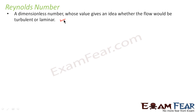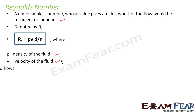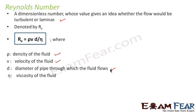Reynolds number is basically a number — the number itself will denote whether the flow is laminar or turbulent. It is generally denoted by RE, where the subscript E stands for Reynolds. The expression for Reynolds number is RE = ρVD/η, where ρ is the density of the fluid, V is the velocity of the fluid, D is the diameter of the pipe through which the fluid flows, and η is the viscosity of the fluid. If we know all these values we can calculate Reynolds number and determine whether the flow is laminar or turbulent.